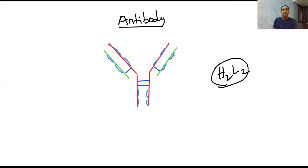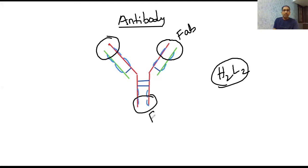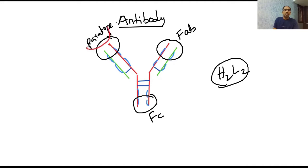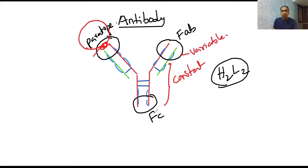Disulfide bonds are also found within the heavy and light chains themselves. The terminal parts of the heavy and light chains together are considered the Fab site, or antigen binding site. The last part of the stem region is called the Fc site — fragment crystallizable site. This part is also called the paratope, or antigen binding site, and it can bind with the epitope of the antigen. The remaining part of the arm and stem together is considered the constant region, and the terminal part is the variable region.